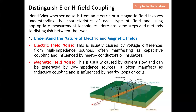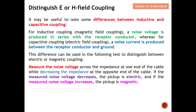As for magnetic field noise, this is usually caused by current flow and is generated by a low-impedance source. It often manifests as inductive coupling and is influenced by nearby loops or coils. When current flows through a conductor, a magnetic field is generated circling around the conductor — this is the source of magnetic field noise. We need to distinguish between these two to adopt the appropriate solution.